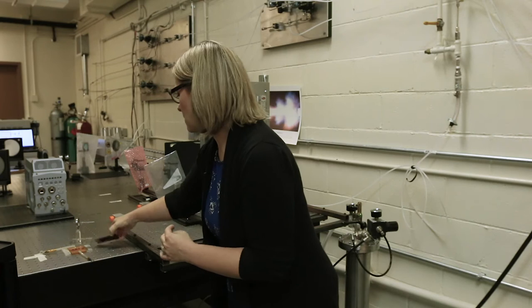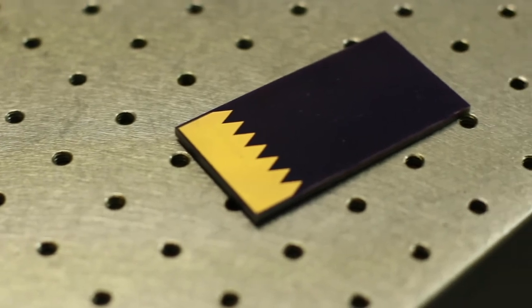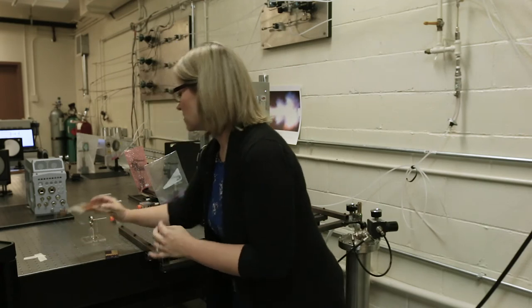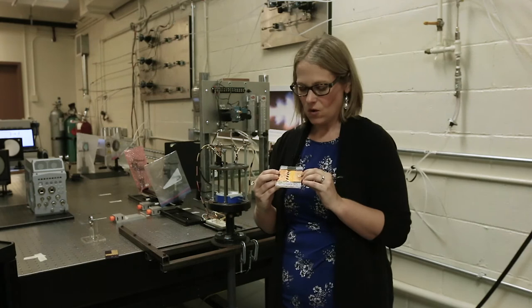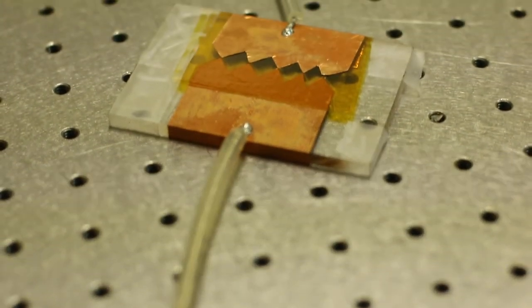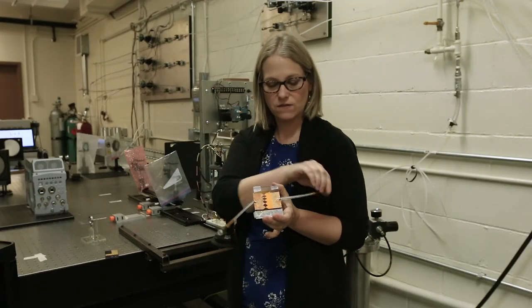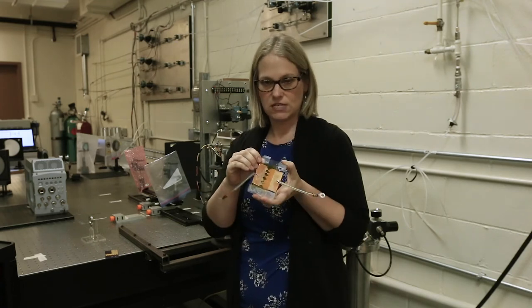Here on the table we have a couple examples of some plasma actuators that we're developing. If we're interested in aerodynamic flow control we want to be able to generate the plasma on the surface of an aerodynamic body. So we build actuators that look kind of like this where we have electrodes actually glued or attached onto the surface. So this is a desktop model where we again apply the high voltage and we generate plasma filaments between these saw teeth.